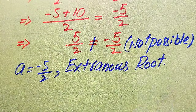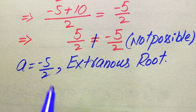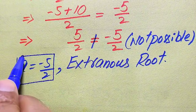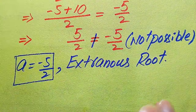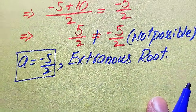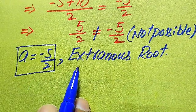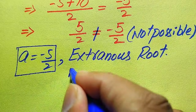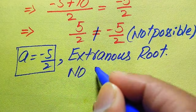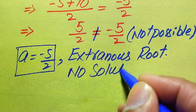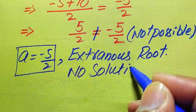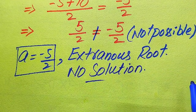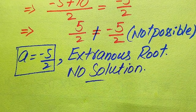Since a = −5/2 is an extraneous root, we cannot find any value of a that satisfies the given equation. We finally conclude that this equation has no solution in general.